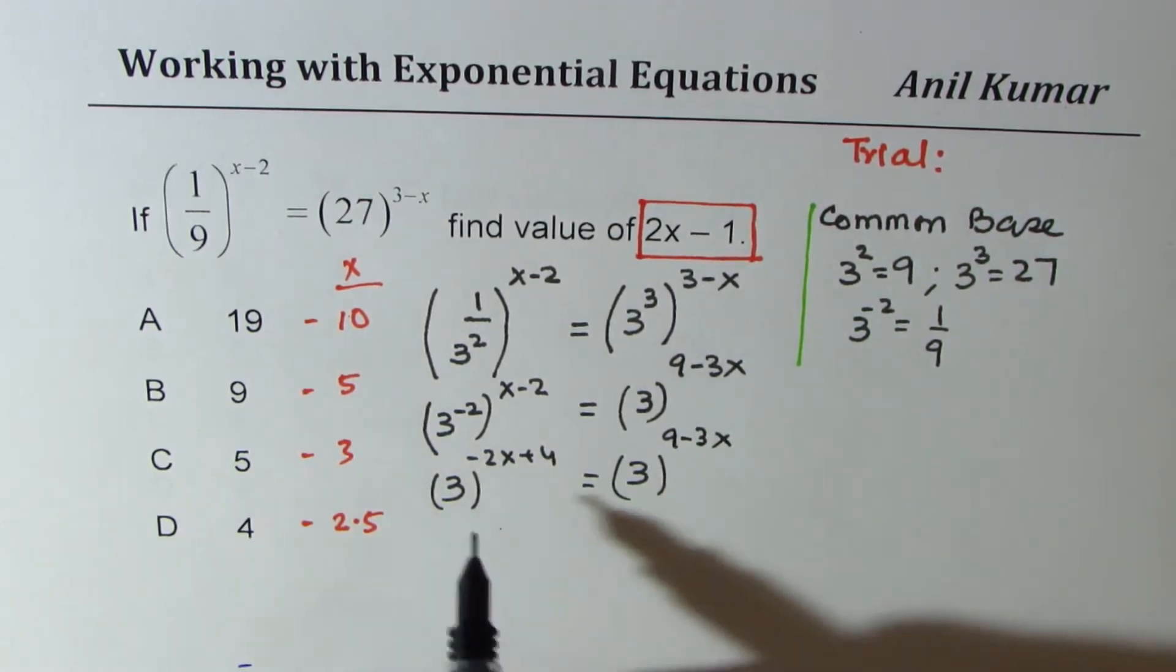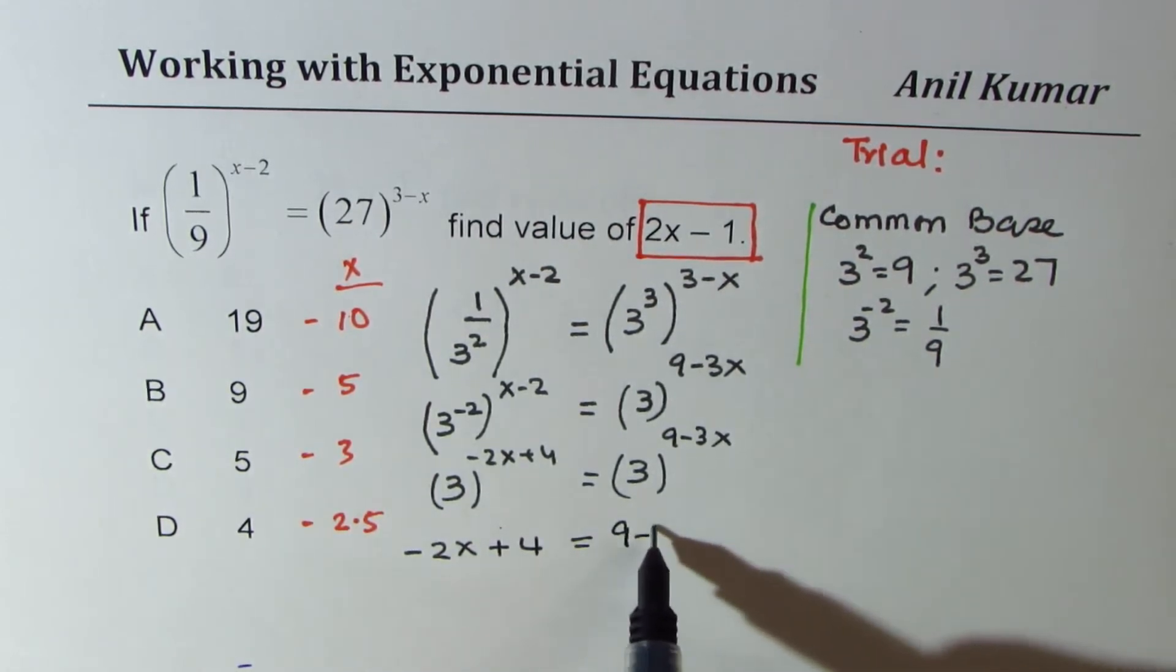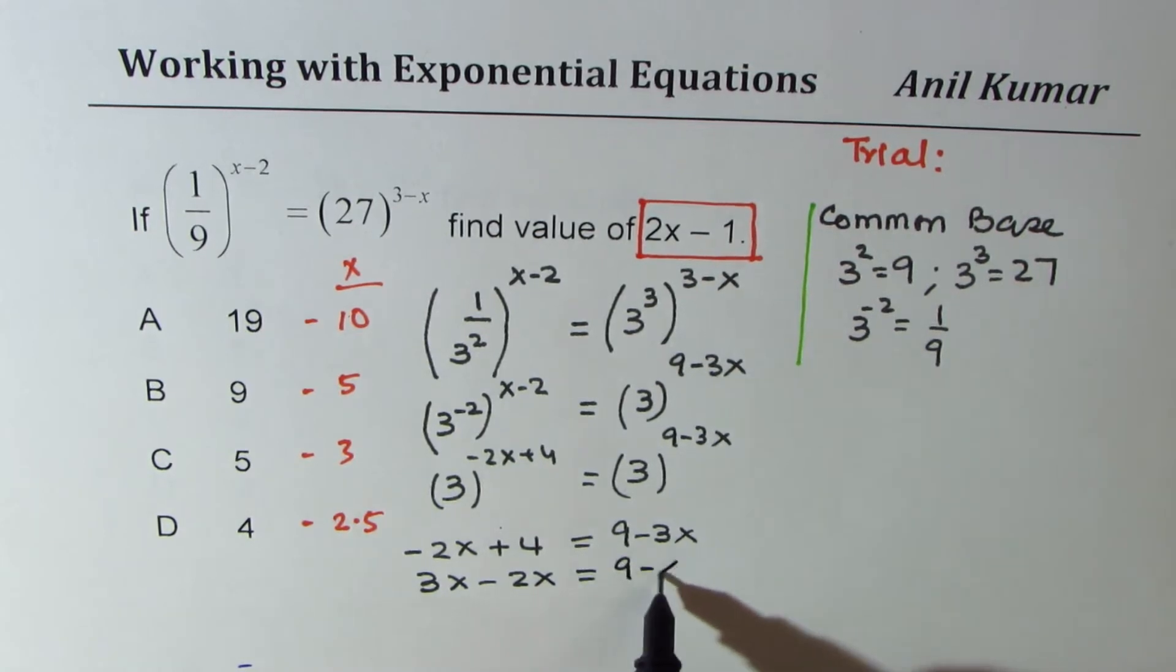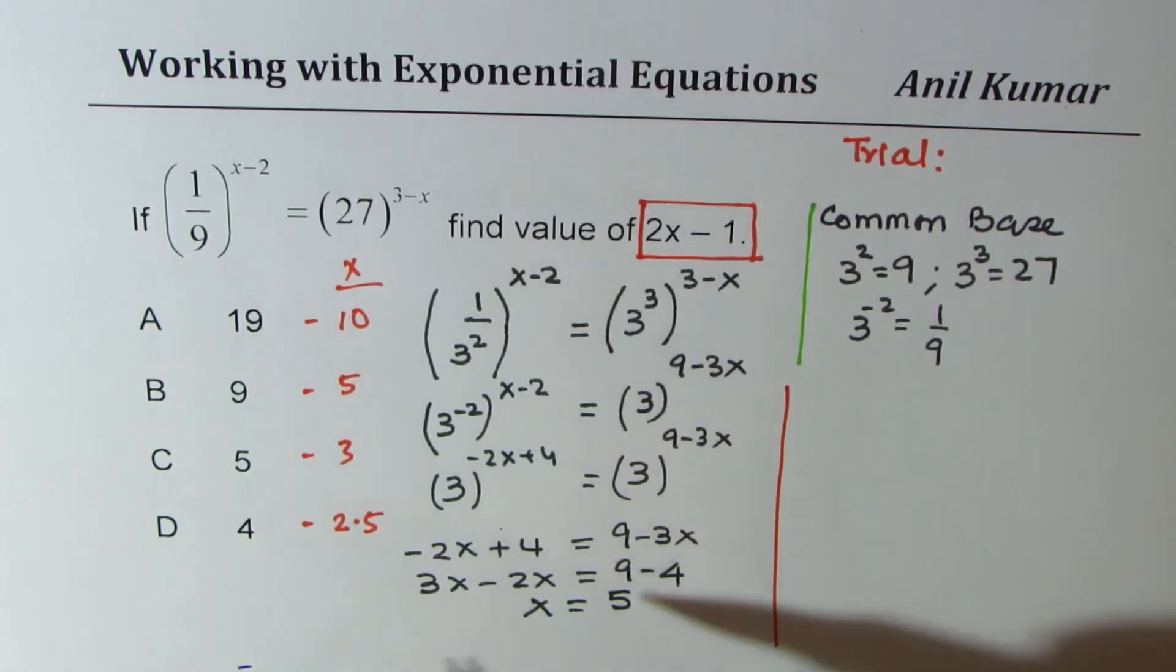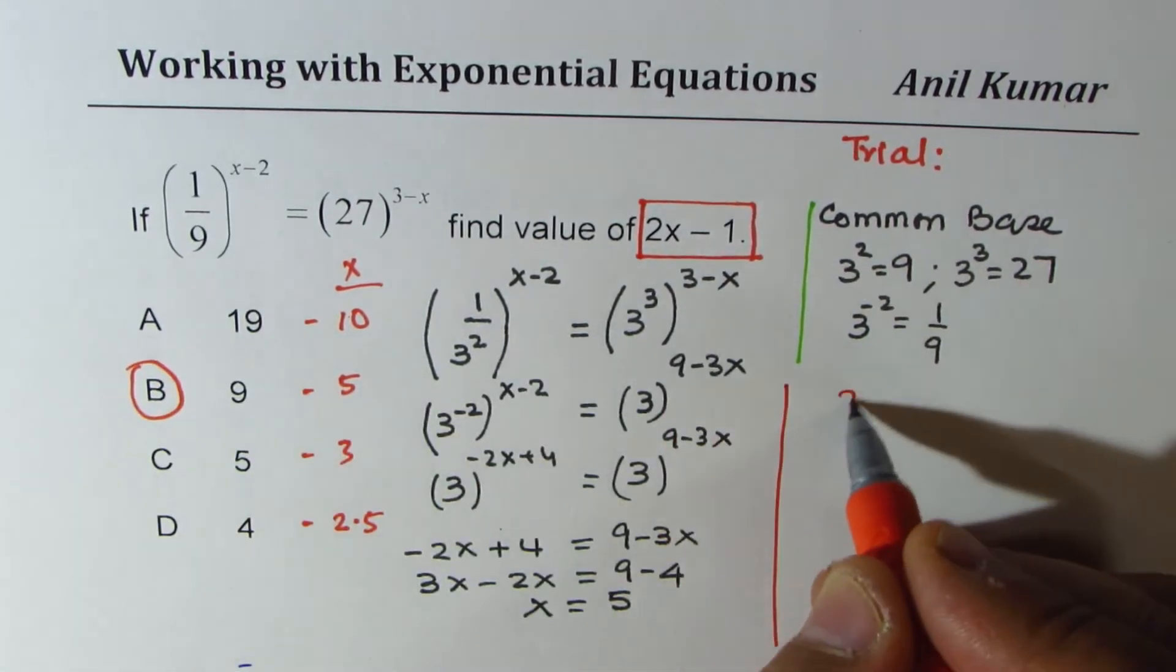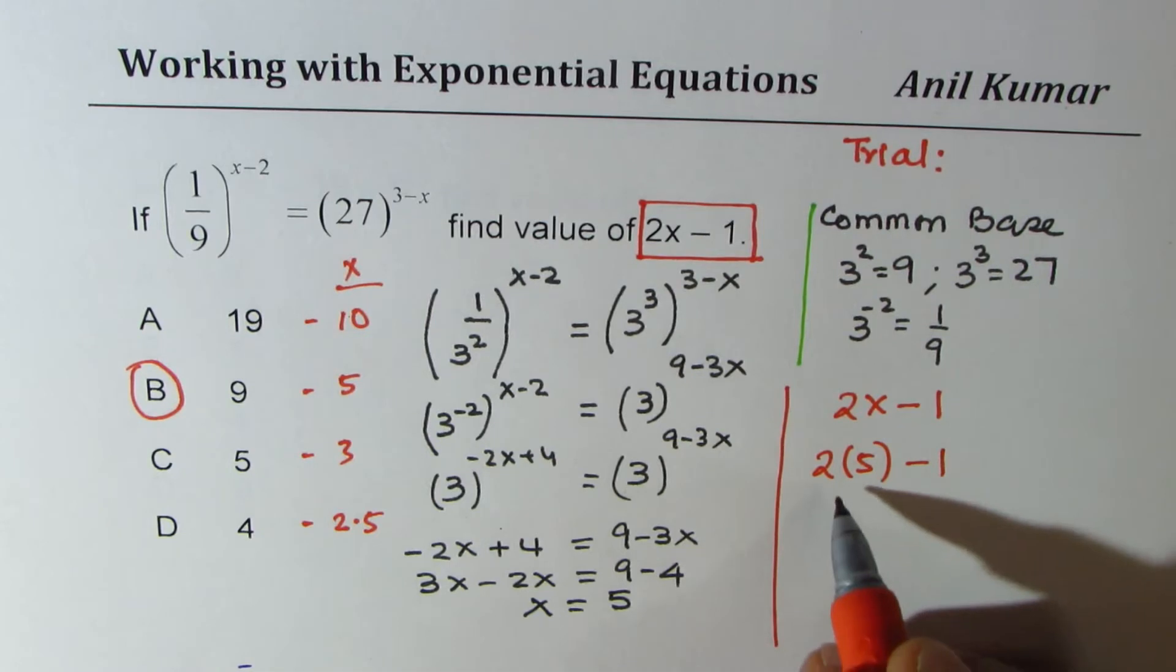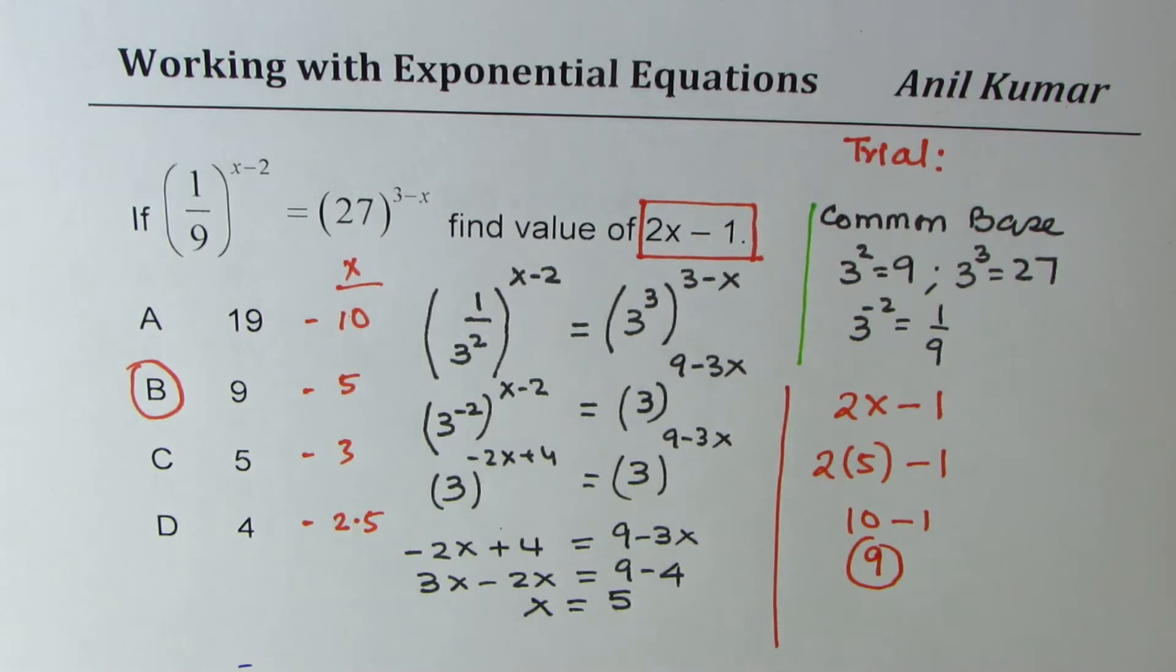Now that gives you a linear equation, which is minus 2x plus 4 equals to 9 minus 3x. Bring the x terms together. So we have 3x minus 2x equals to 9 minus 4. And that gives you x equals to 5. So the solution is B, since we want to find what is 2x minus 1. Substitute 5 here, 2 times 5 minus 1, which is 10 minus 1, which is 9. So that is how you are going to get the solution.